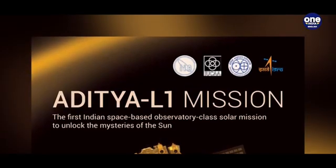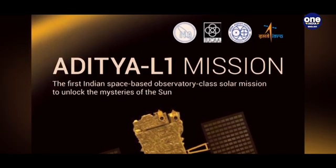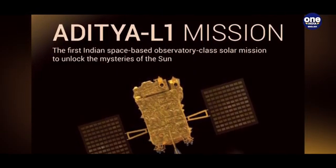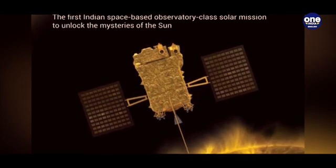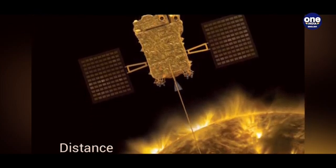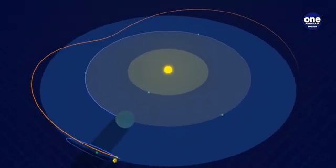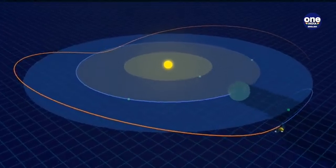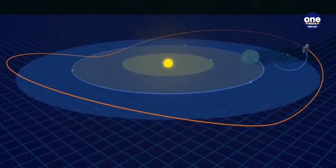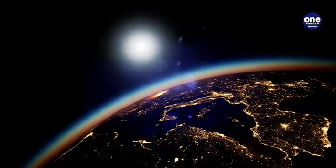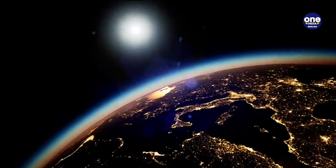The mission involves placing Aditya L1 in a set orbit from where it would be easy to observe different phenomena on the Sun's surface. It will be placed in a halo orbit around the Lagrange Point L1 of the Sun-Earth system. The location is around 1.5 million km away from Earth.